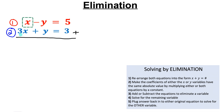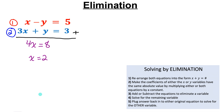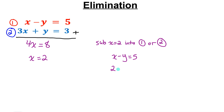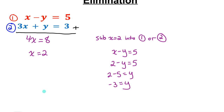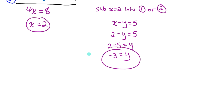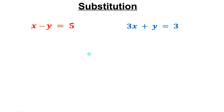Let's add the equations, collecting like terms. x + 3x = 4x; −y + y = 0 — they eliminate. 5 + 3 = 8, so we have 4x = 8. Divide both sides by 4: x = 2. Now sub x = 2 into the first equation: 2 − y = 5. Isolating y gives −3 = y. So x = 2, y = −3 — the same answer we got by graphing.